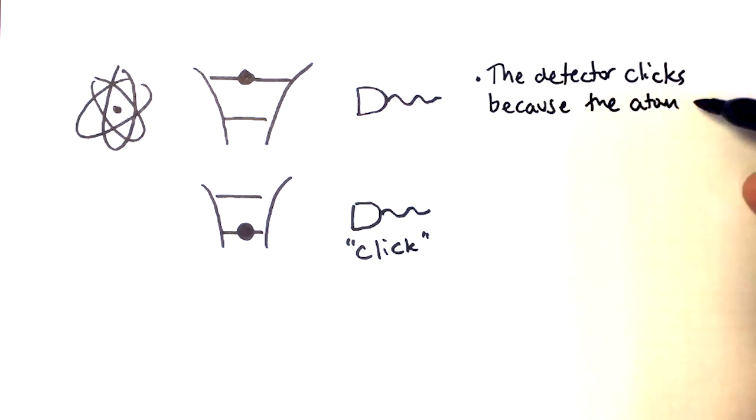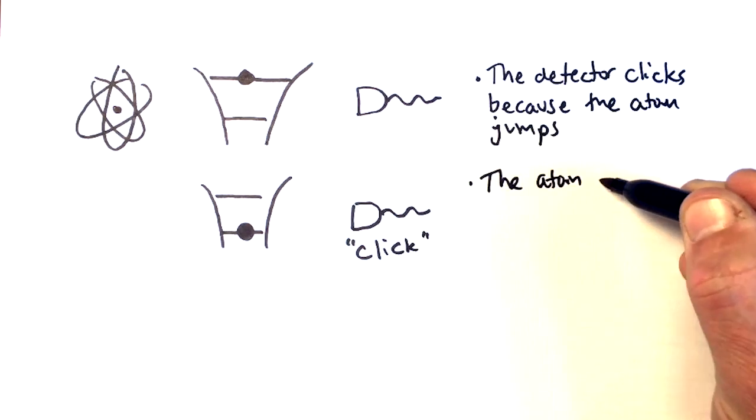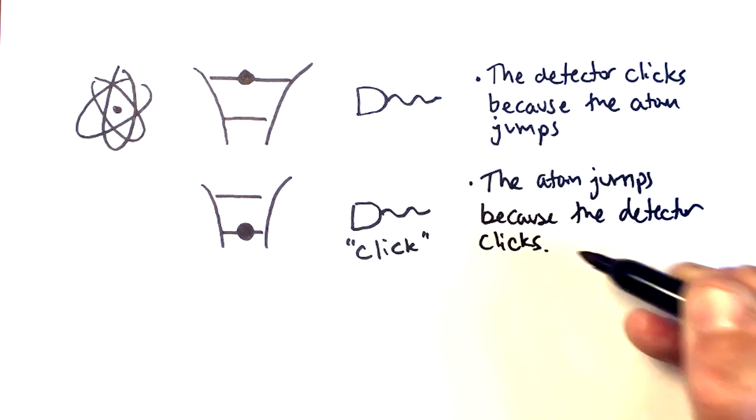Consider two explanations. First, the detector clicks because the atom jumps. Or second, the atom jumps because the detector clicks.